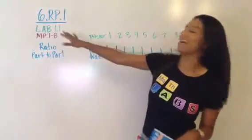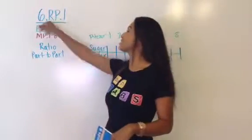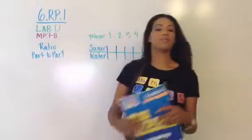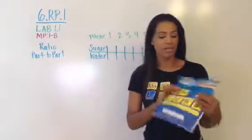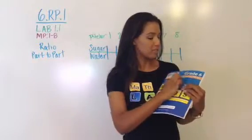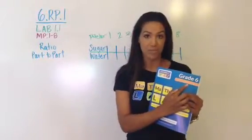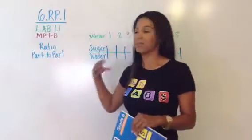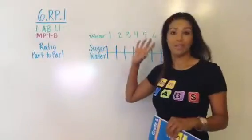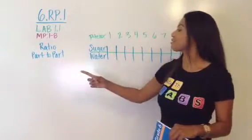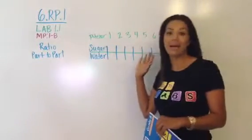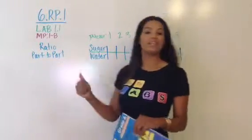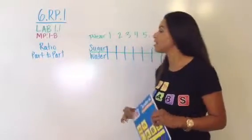Today we are focusing on Common Core Content Standard 6.RP.1 which corresponds to Lab 1.1 in the Grade 6 Ratio and Proportional Relationships unit, and the mathematical practices are 1 through 8, all of them. It's an application problem, kids will be persevering, they have to justify reasoning, use a model which is going to be a ratio table and look for a pattern in it, so repeated reasoning and all of those important skills.